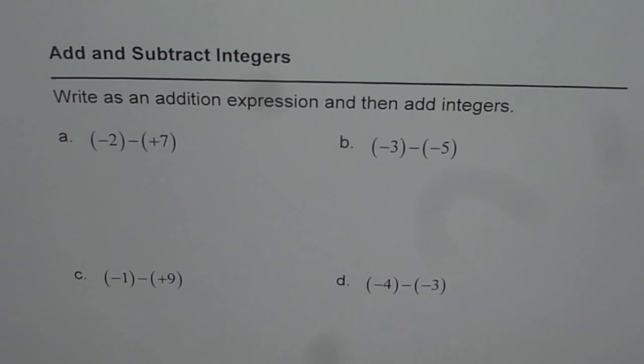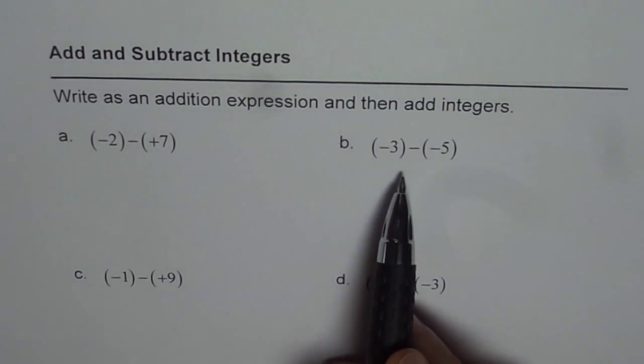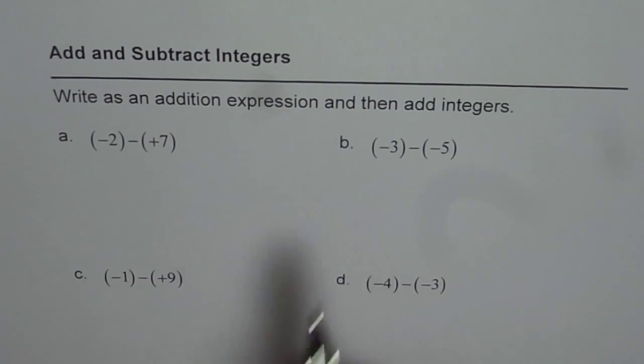As you can see, B and D are similar and A and C are similar. I will solve A and B for you and then C and D is for you to practice. You can pause the video, copy these questions and solve them on your own as you know the method. So our first step is to write these expressions as addition and then we will use counters this time to add integers.